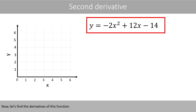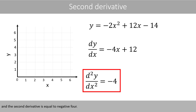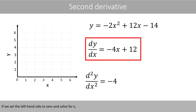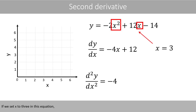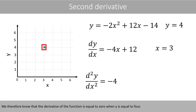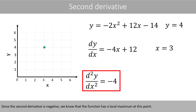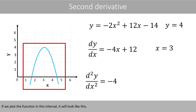Now let's find the derivatives of this function. The derivative of this function is negative 4x plus 12, and the second derivative is equal to negative 4. If we set the left-hand side to 0 and solve for x, we know that the derivative is equal to 0 when x is equal to 3. If we set x to 3 in this equation and do the math, we see that y is equal to 4. We therefore know that the derivative of the function is equal to 0 when y is equal to 4. Since the second derivative is negative, we know that the function has a local maximum at this point. The function should therefore look something like this at this point, and if you plot the function in this interval, it will look like this.